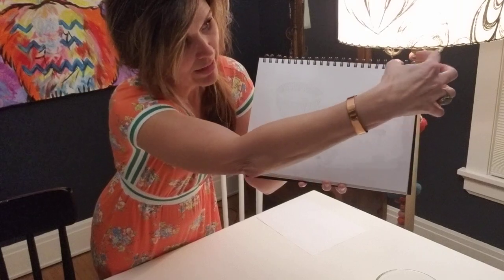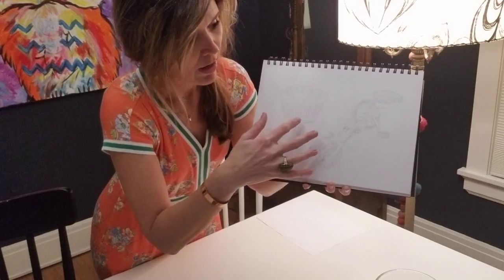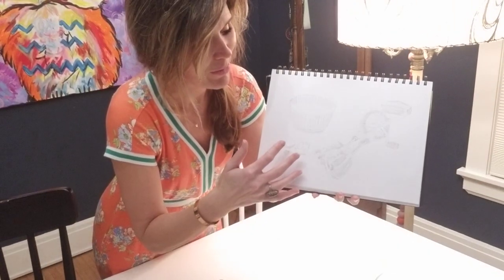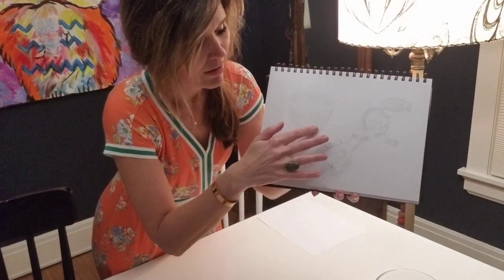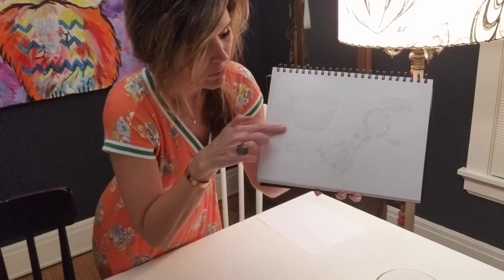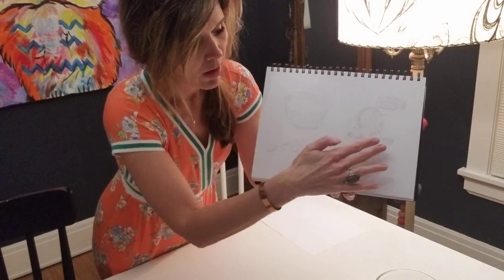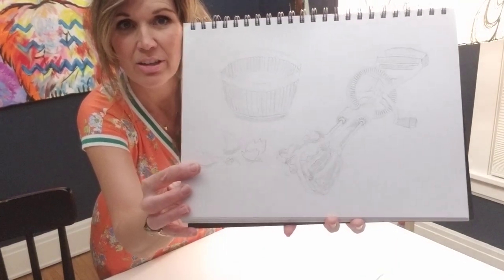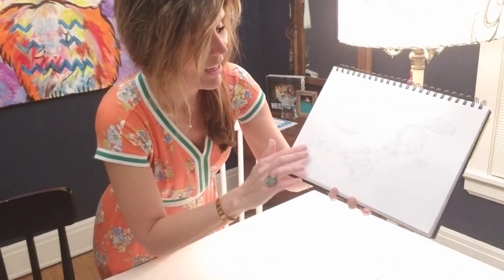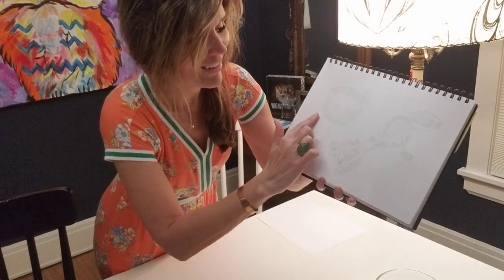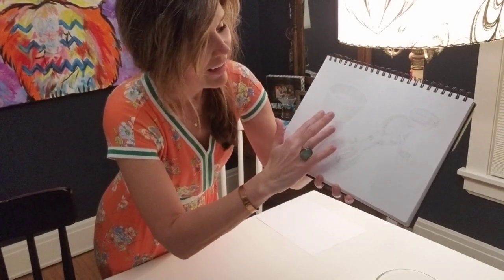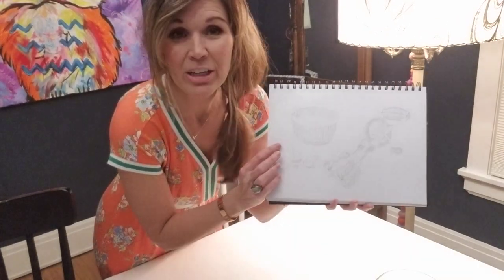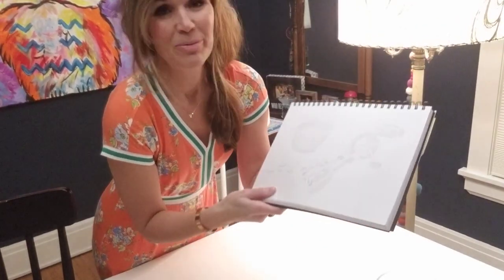If there's light coming in from a window or artificial light like a lamp or an overhead light, then there'd be a shadow underneath the bowl, or a shadow even underneath the egg beater and underneath the eggshells. What you could do is take your pencil and cast a little bit of a shadow, then blend it with your finger or a tissue, something like that.